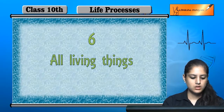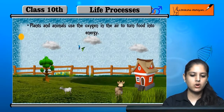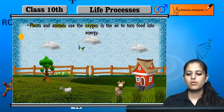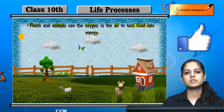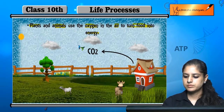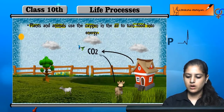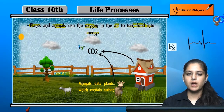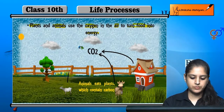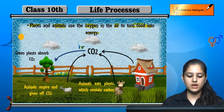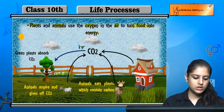The sixth process is respiration — all living things respire. Plants and animals use oxygen present in the air. Carbon dioxide is also present in the atmosphere. Animals respire and give out carbon dioxide, and green plants absorb carbon dioxide.